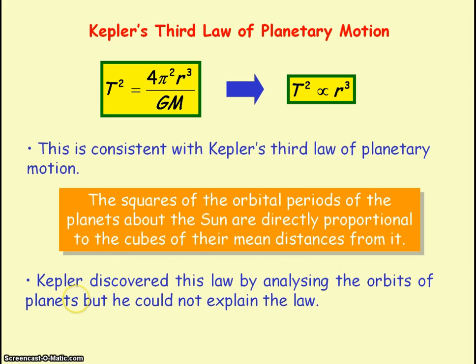Kepler discovered this law by analysing the orbits of different planets around the sun. However, he couldn't explain why t squared was directly proportional to r cubed. The reason why is from Newton's law of gravitation, and we previously showed how Newton's law of gravitation is used to prove Kepler's third law.